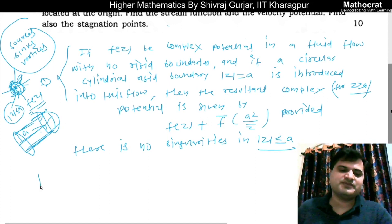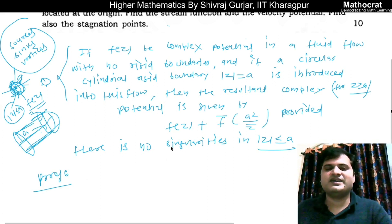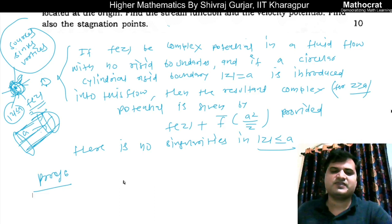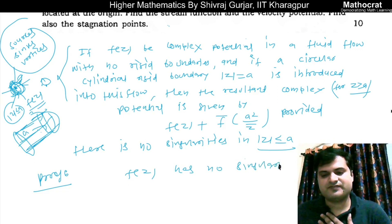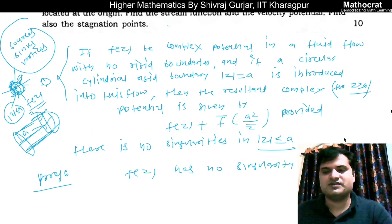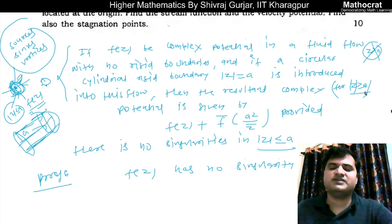This is the proof — it is two or three lines. F(z) is given to have no singularity for modulus z less than or equal to A. F(z) has no singularity for modulus z less than or equal to A. Now for modulus z greater than A, we need to check the behavior of F-bar(a² / z̄).